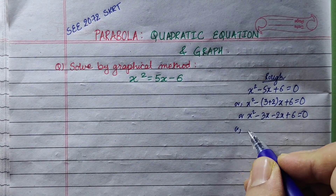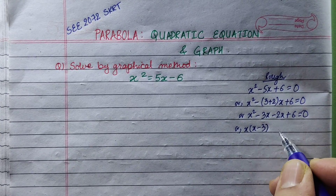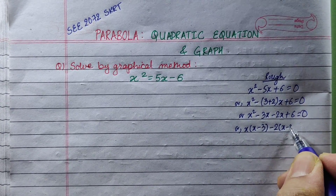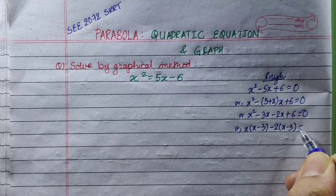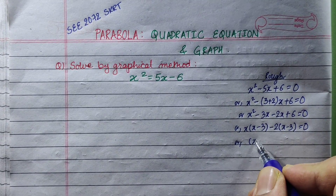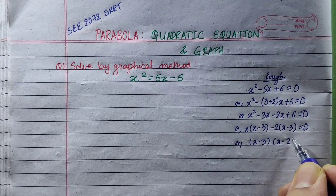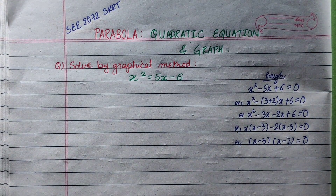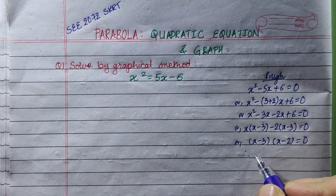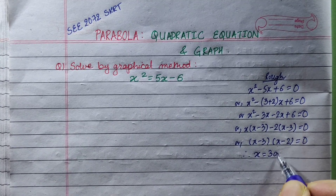Taking x common: x(x minus 3) minus 2(x minus 3) is equal to 0. So x minus 2 is equal to 0 and x minus 3 is equal to 0. Therefore x equals 2 or x equals 3.